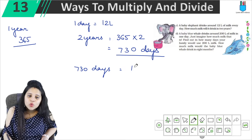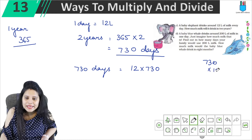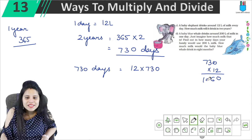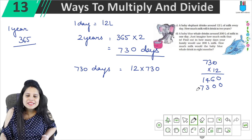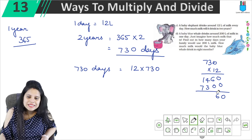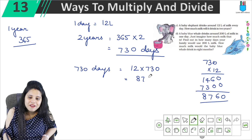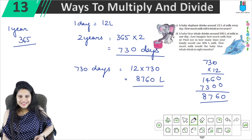So it will be 12 into 730. Let's do the multiplication: 730 multiplied by 12. 2 into 0 is 0, 2 into 3 is 6, 2 into 7 is 14. Then 1 into 0 is 0, 1 into 3 is 3, 1 into 7 is 7. Adding up: 0, 6, 4 carry 1, then 7 plus 1 is 8, giving 8,760. So in 2 years the baby elephant will drink 8,760 liters of milk.